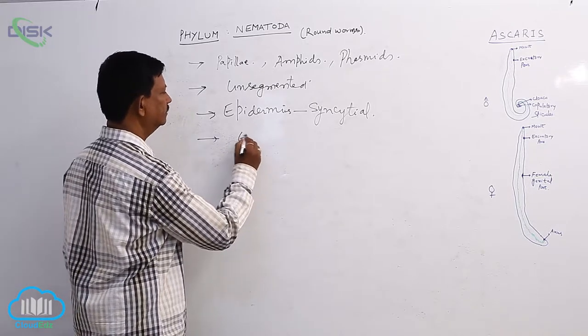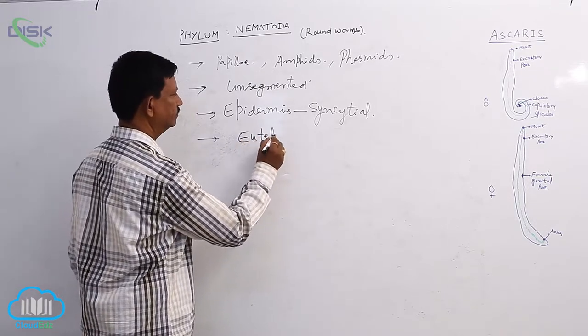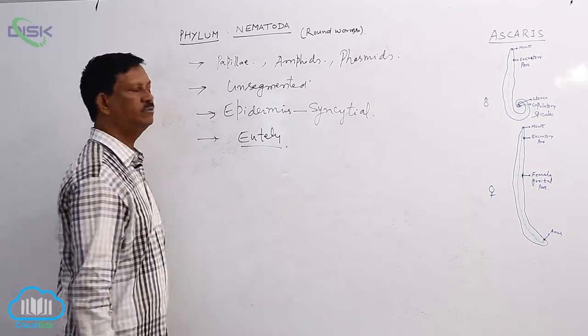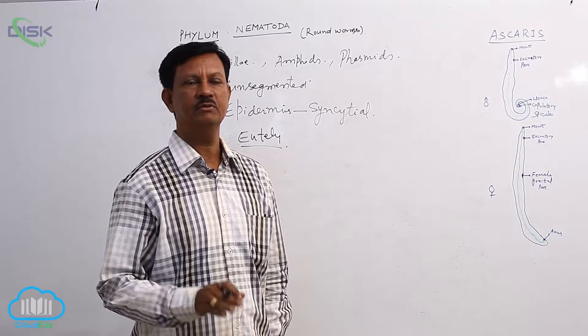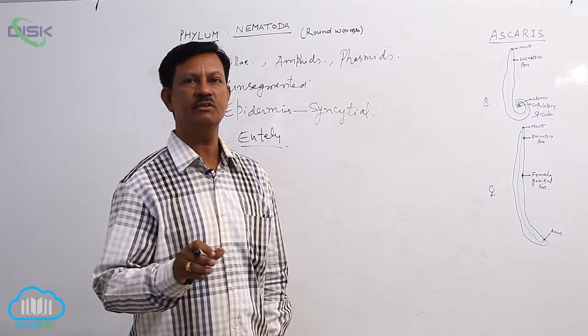They show eutely. What is eutely means? Generally the development takes place up to certain stage. When it becomes into adults, the cell number does not increase.